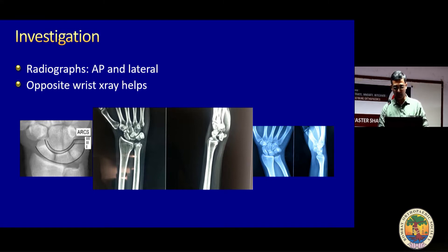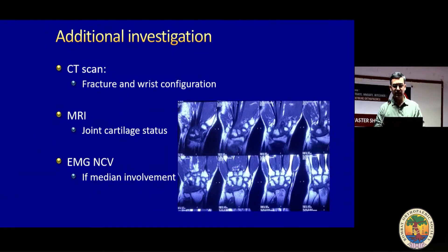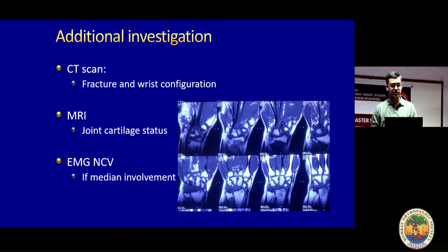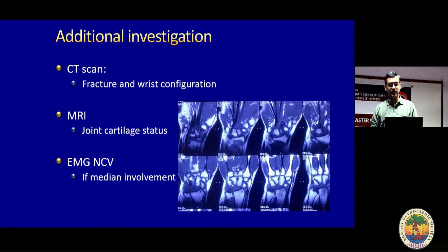This applies for acute as well as missed cases. You can also take X-rays of the opposite side for comparison. In a missed situation, I would like to do at least one of two things: CT scan or MRI. I prefer MRI — not just to diagnose the PLD but to assess soft tissue condition and the cartilage of the radius and capitate. If cartilage is very poor, you know you're heading toward a salvage procedure. If cartilage is good, preservative surgery may be possible. If the patient has median nerve symptoms, get an EMG/NCV done, as it's medically important and will decide whether you need to go volar.